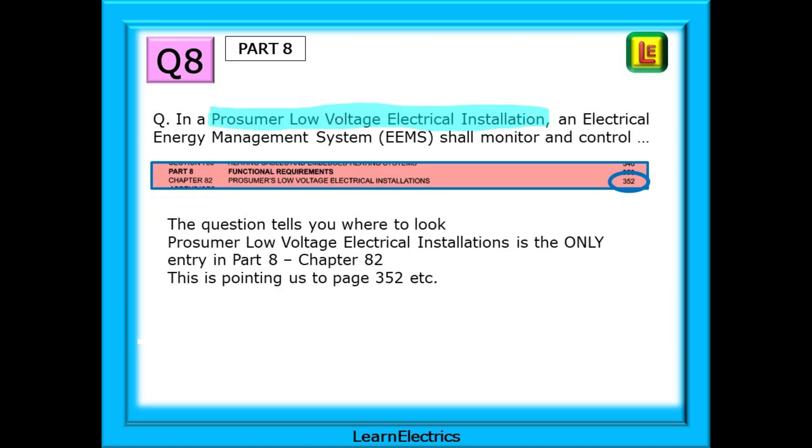We should go to page 3 and look under the part 8 entries for prosumer low voltage electrical installation. Notice that at the moment chapter 82 is the only entry in part 8 of the book. We are pointed towards page 352 etc. and this is where we will find the answer.